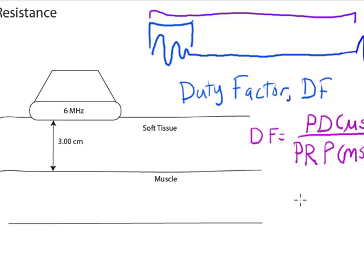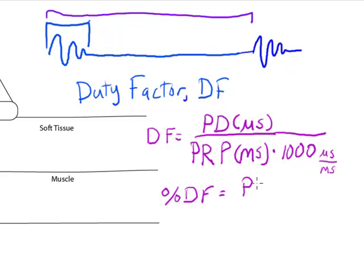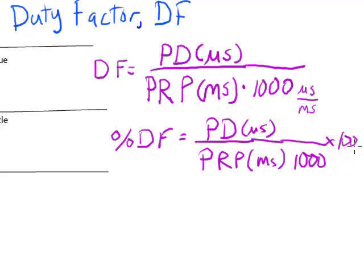A lot of times these would be expressed as a percentage. So if I wanted to make it a percent duty factor, I'd have to take this fractional duty factor and multiply by 100%. So let's do an example of this type of calculation.